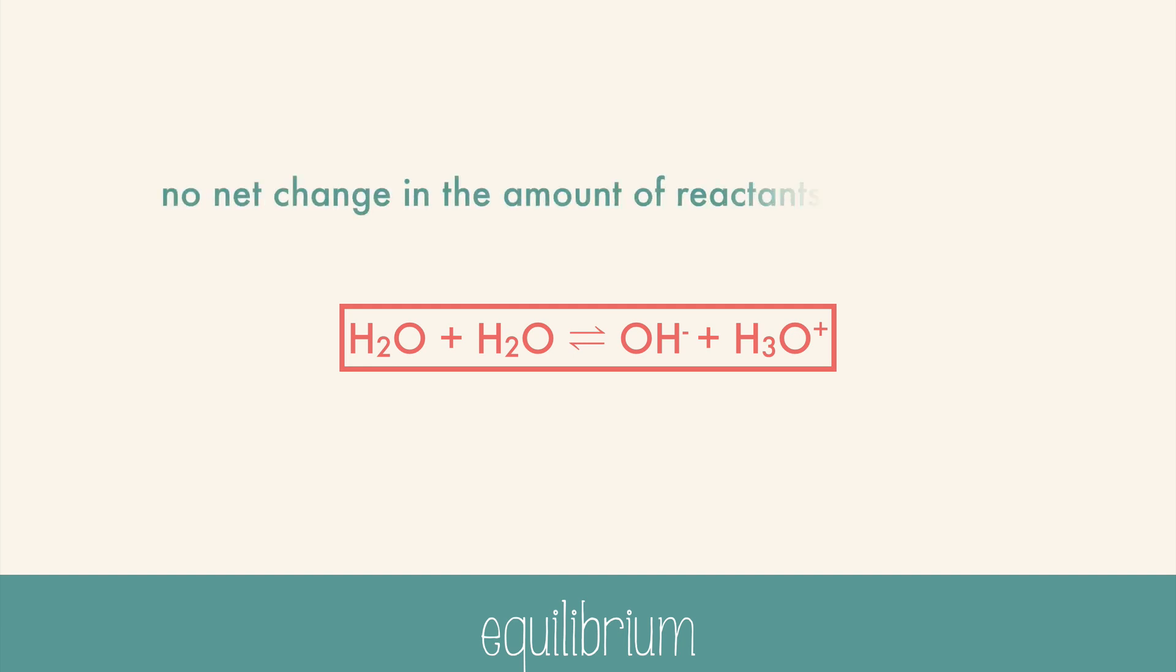Overall there is no net change in the amount of reactants or products. We say no net change because a reaction is still occurring in both directions, but the concentration of reactants and products will remain steady. Because the reaction is still occurring, the equilibrium is often called a dynamic equilibrium.